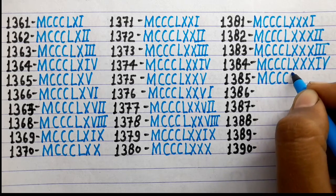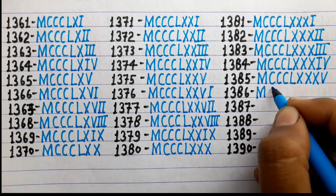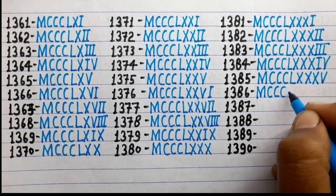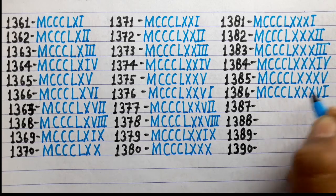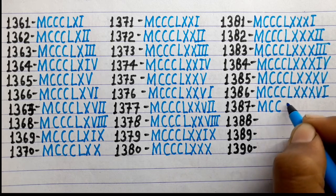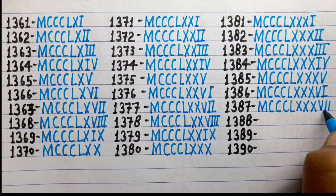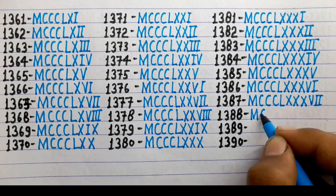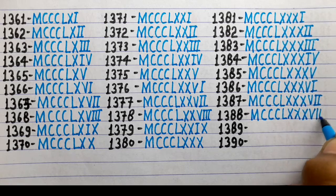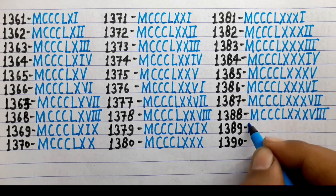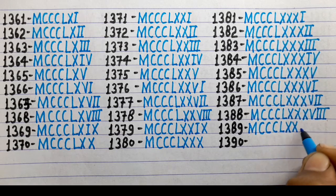1385 is MCCCLXXXV. 1386 is MCCCLXXXVI. 1388 is MCCCLXXXVIII.